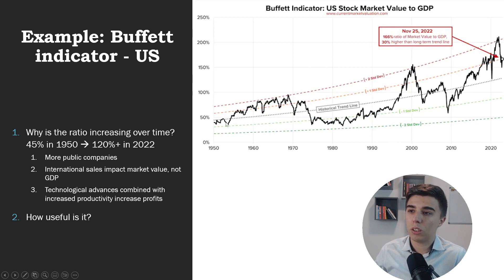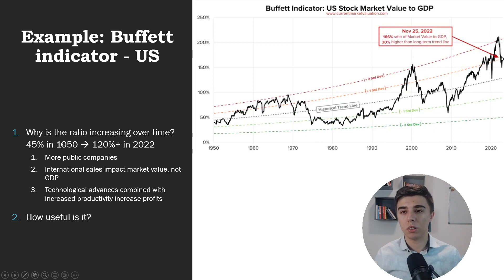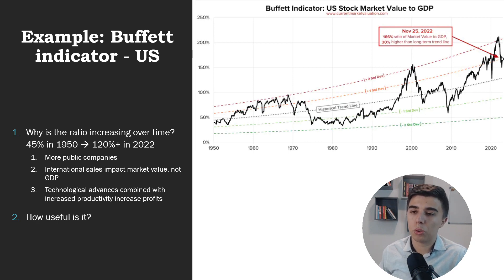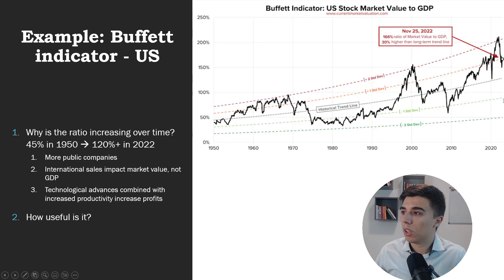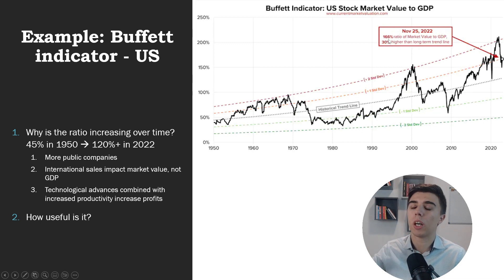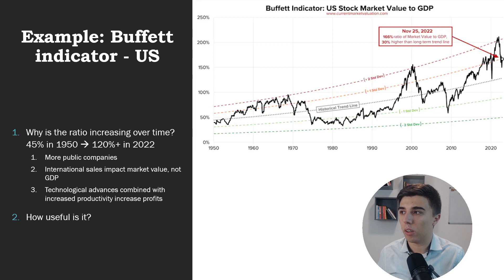Looking at the historical representation of the Buffett indicator for the US: back in the 1950s, the normalized line was somewhere around 45% — meaning the market cap compared to GDP was 45%. Today in 2022, the normalized line is around 120%, while the actual current level is 166%, which is much higher than where one would expect companies, on average, to be fairly valued. That doesn't mean every company is overvalued — of course some are, some are not — but the aggregate suggests elevated valuations.